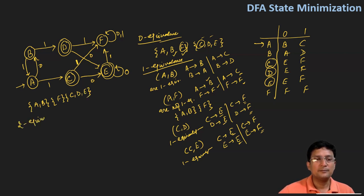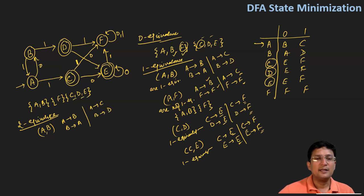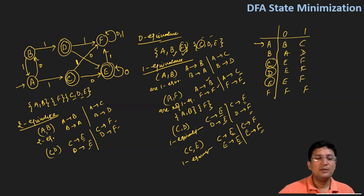Now I will go for the two equivalence. Checking A and B: A on zero goes to B, B on zero goes to A — A and B belong to the same set. A on one goes to C, B on one goes to D, and C and D are in the same set. So A and B are two equivalent. Checking C and D: C on zero goes to E, D on zero goes to E; C on one goes to F, D on one goes to F. E and E, F and F are in the same sets, so C and D are two equivalent.